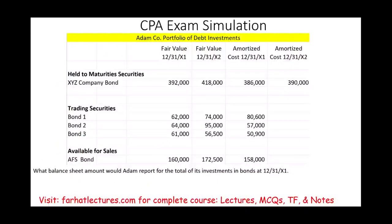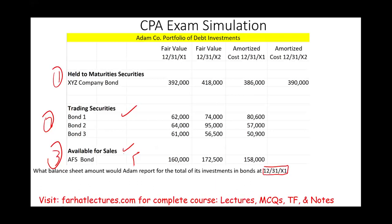Let's answer the first question: What balance sheet amount would Adam report for its investment at the end of December 31st, 20X1? We need to know how the investments are reported on the balance sheet. We have three categories: held-to-maturity, trading, and available for sale. For available for sale and trading securities, we report the securities at fair market value, using the X1 fair values.